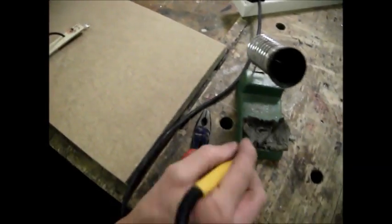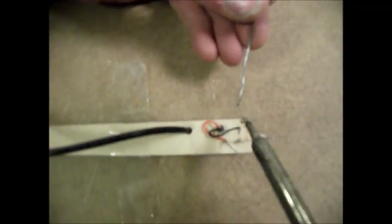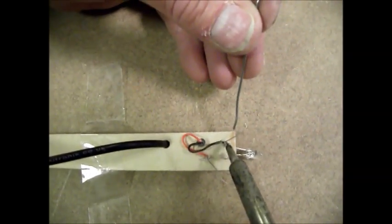And then soldering iron on the sponge, tin the iron, touch the joint, feed in a bit more solder, and done.